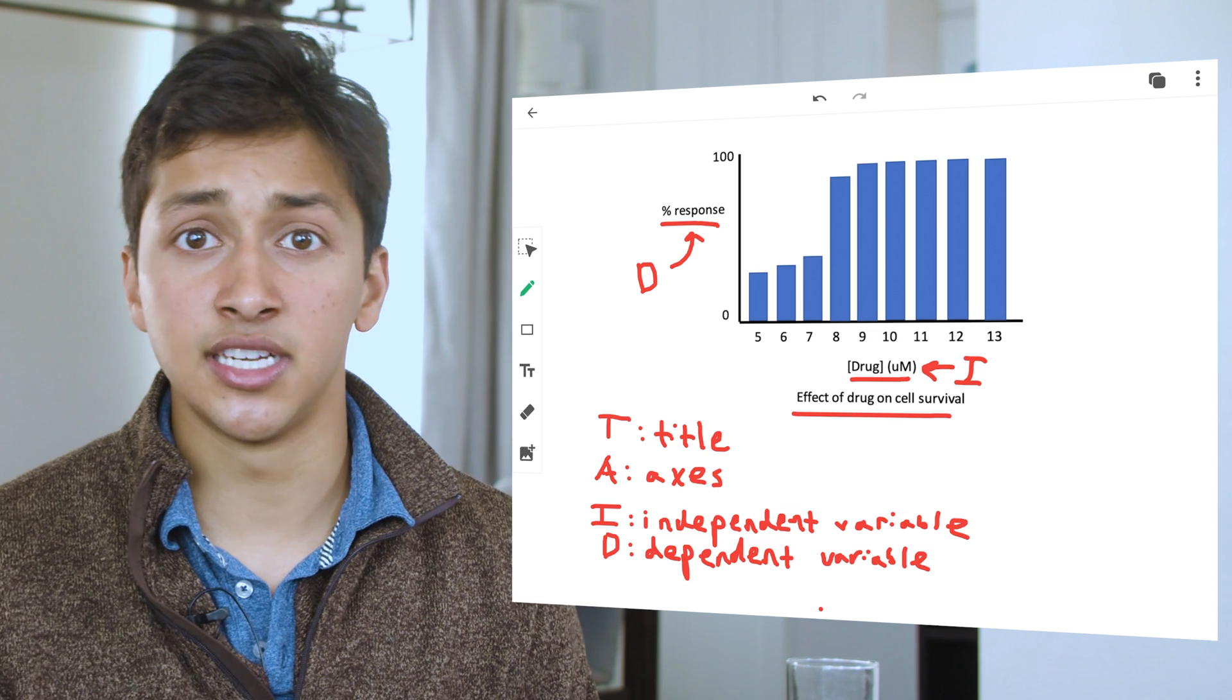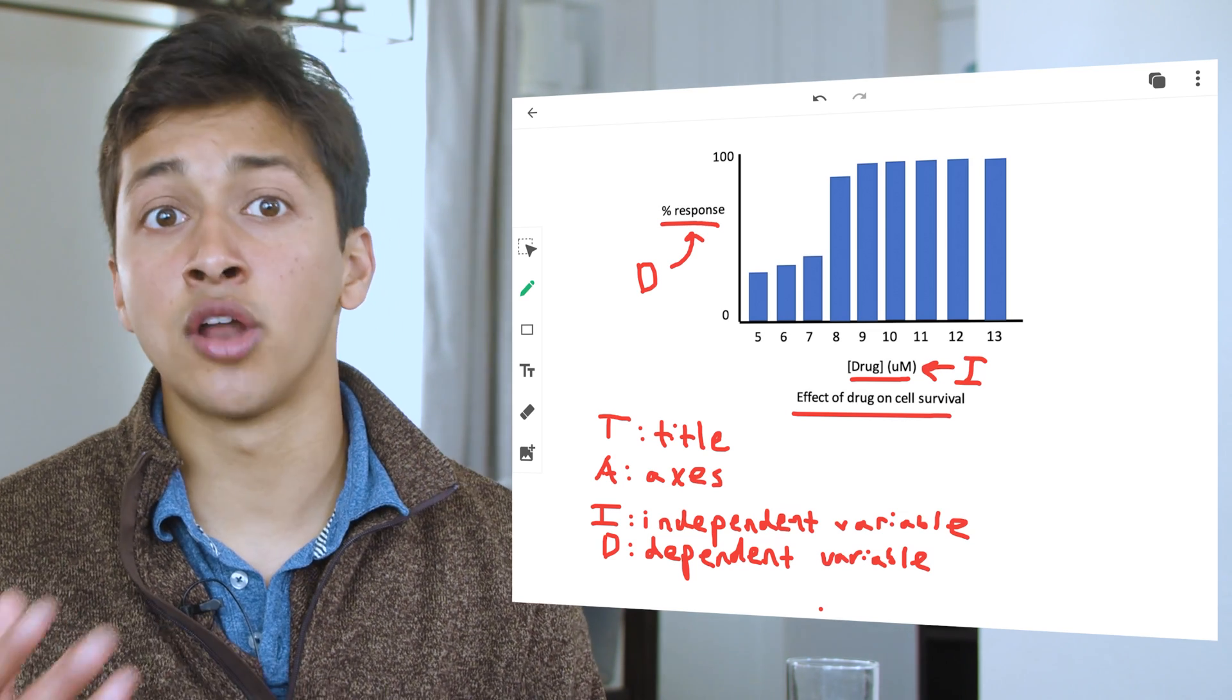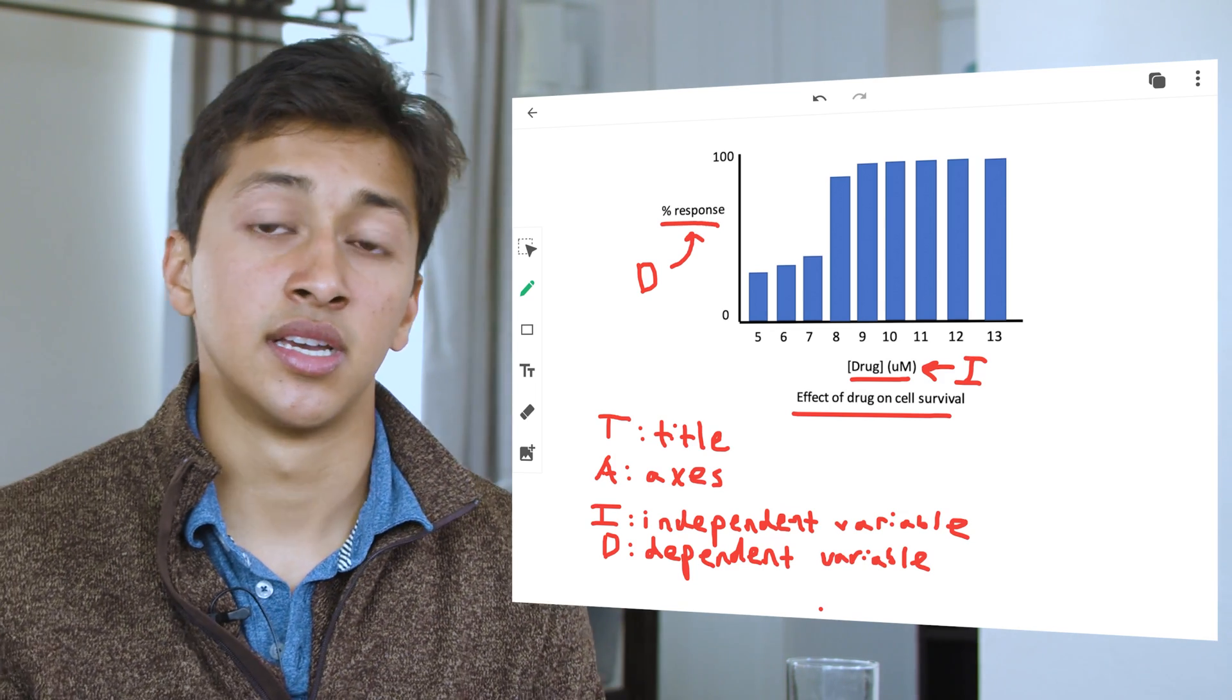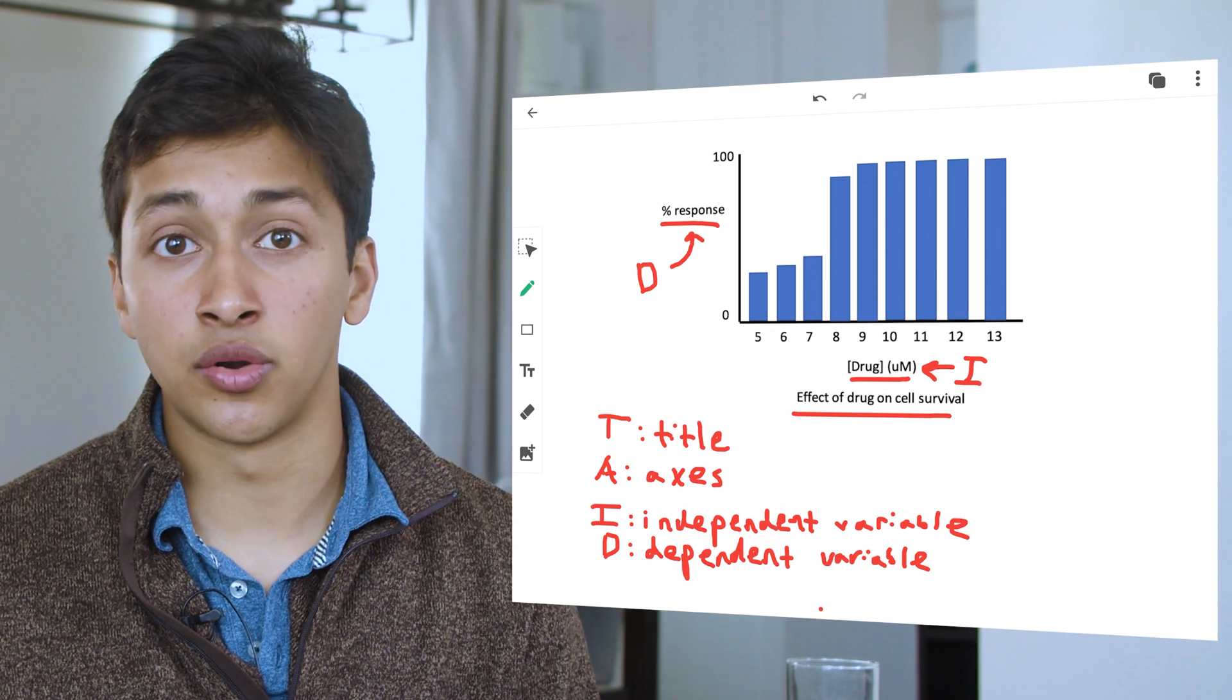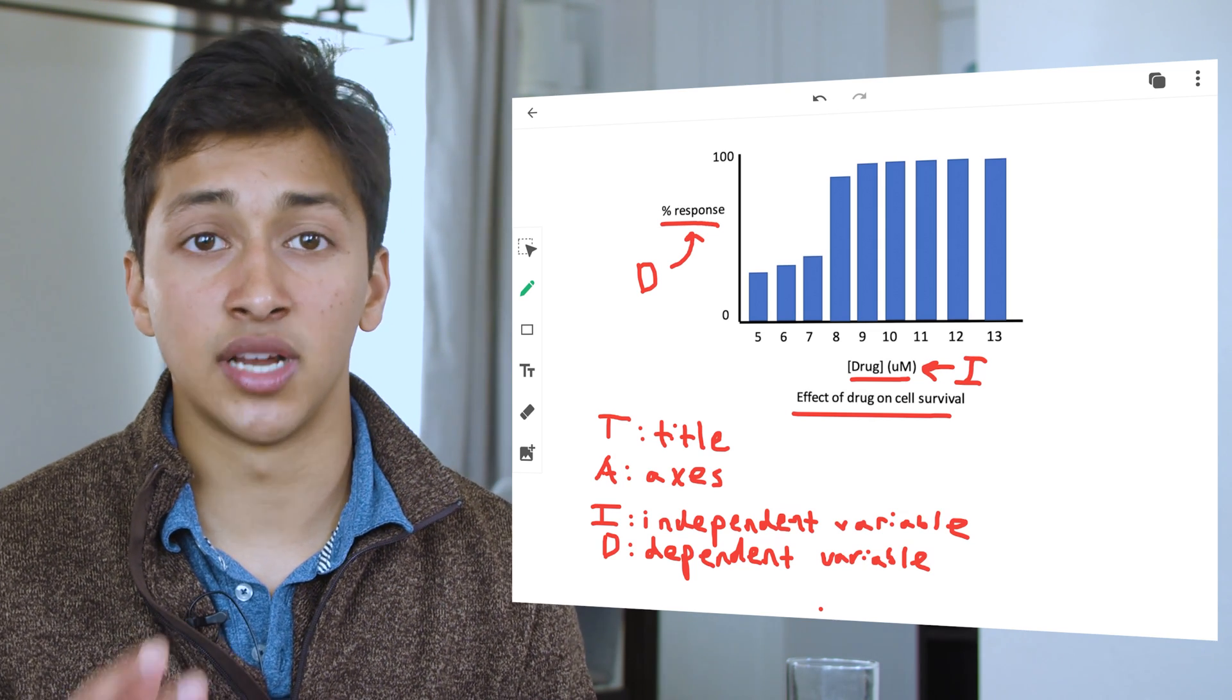First, what do the independent and dependent variables measure? The independent variable is something that you change on purpose, while the dependent variable is the response. The independent variable is also shown on the x-axis, so we know here that drug concentration is our independent variable.